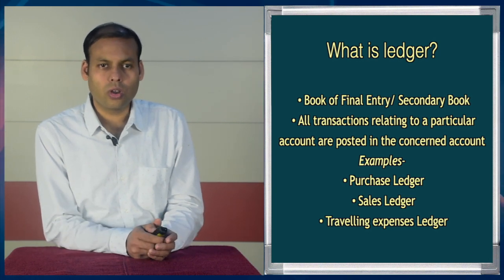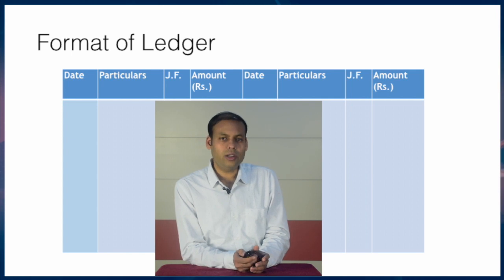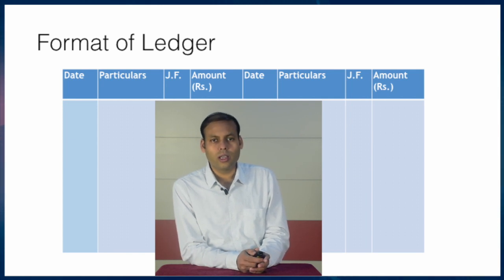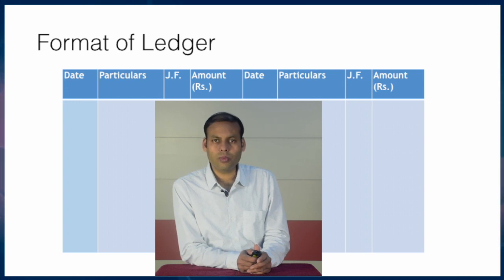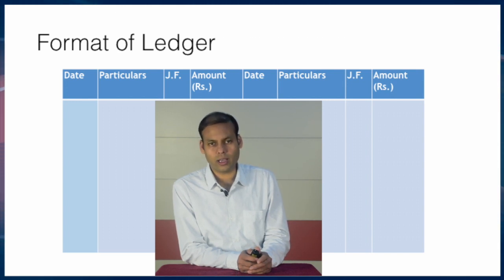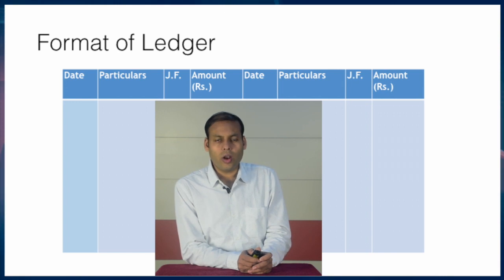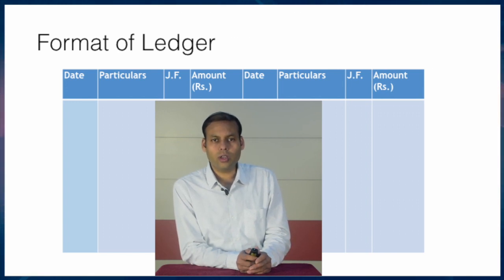Now let us have a look at the format of a ledger. Generally this format is followed: date, particulars, JF, amount — written on both sides. The left-hand side is known as the debit side, and the right-hand side has the same columns — date, particulars, JF, amount — and is known as the credit side of the ledger account. JF stands for journal folio, i.e., the page number of the journal book.